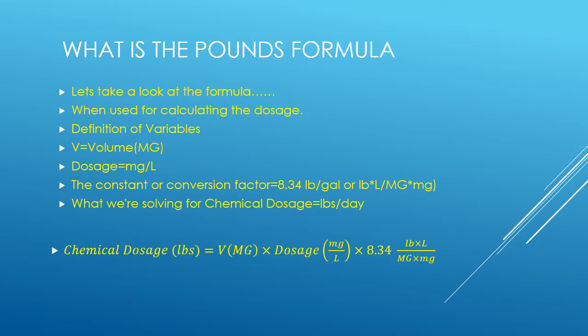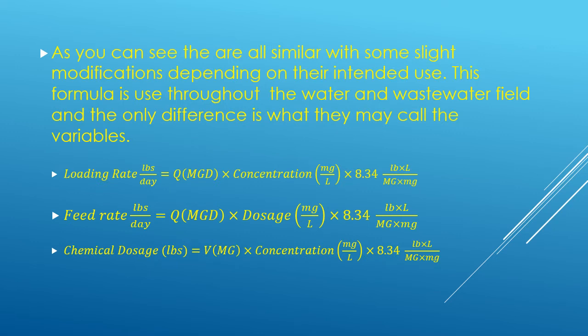Our chemical dosage is a little different but still the same concept. In this one, instead of treating a flow we are treating a volume, and in this case the volume is in million gallons. And of course we still have our same constant, which is 8.34. Again, this is for solving for chemical dosage in pounds per day.